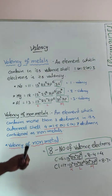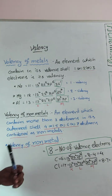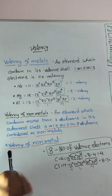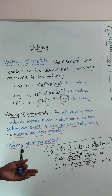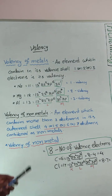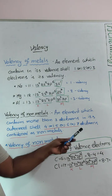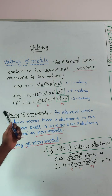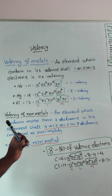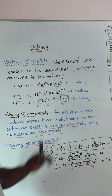Next, Valency of Non-metals. An element which contains more than 3 Electrons — meaning 4, 5, 6, or 7 — is considered a Non-metal. Note: 8 Valence Electrons is a Noble Gas. For Non-metals, finding Valency uses the formula: 8 minus the number of Valence Electrons.